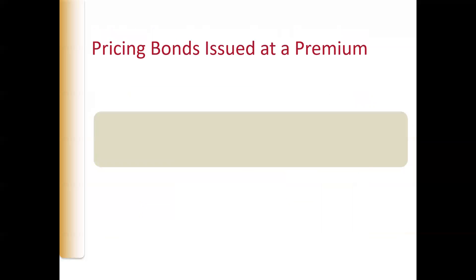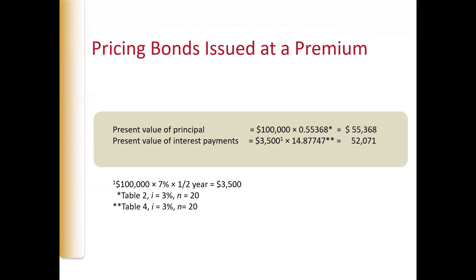The way that you can calculate the issue price of the bond, there are three ways. One is to use a calculator. One is to use Excel. And one method is to use the tables in the back of the book. The tables used would be the present value of a dollar, and that would be for the lump sum of $100,000 — I believe it's Table 2 in the book.